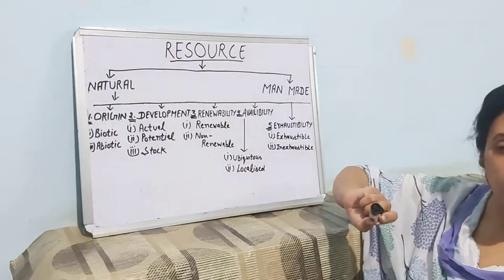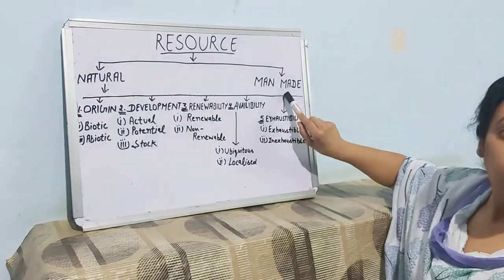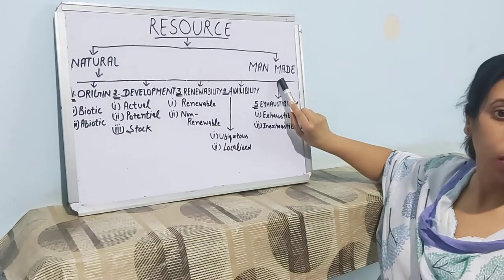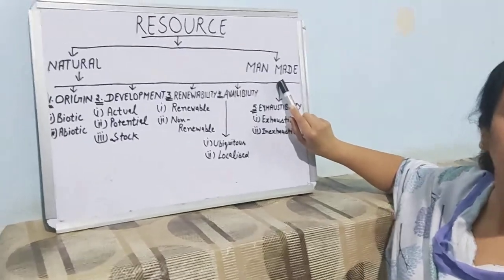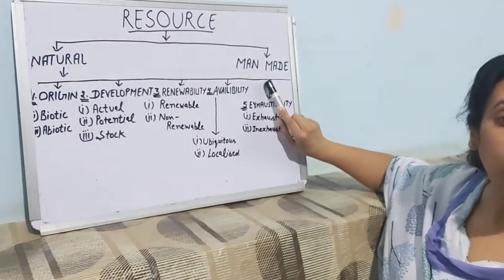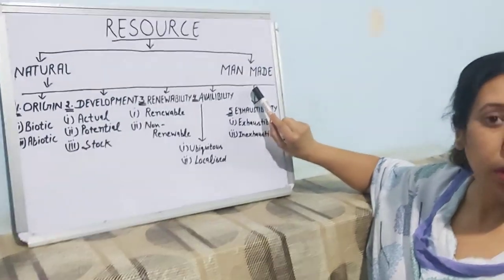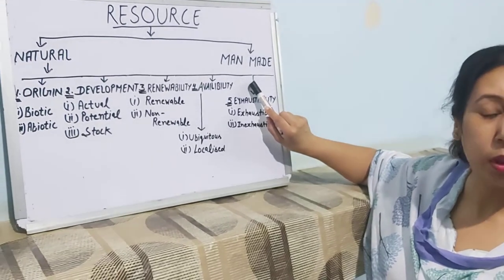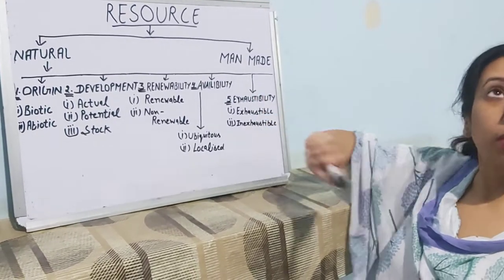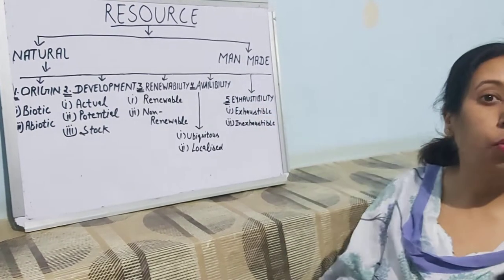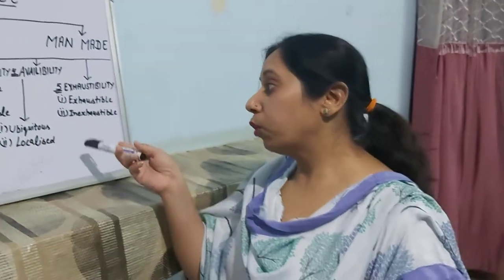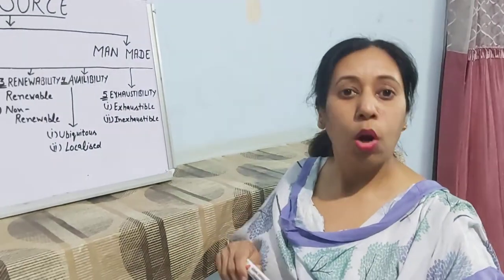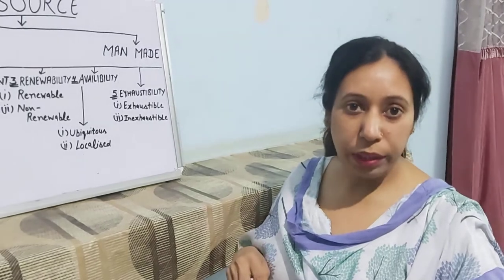First I will talk about the man-made resource. Those resources which are made by human beings, by human activity, are called man-made resources. For example: transport system, aquarium, and things we can see in our surroundings — for example, a fan, this board, this marker. All are examples of man-made resources.